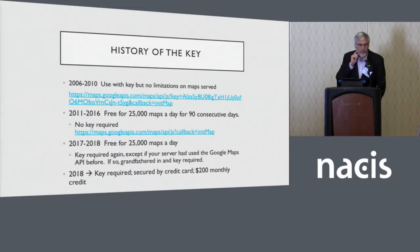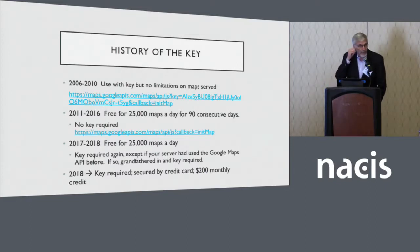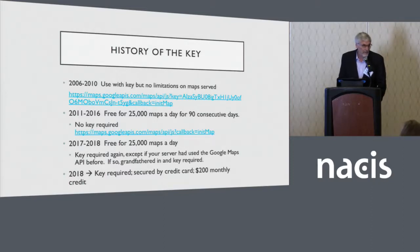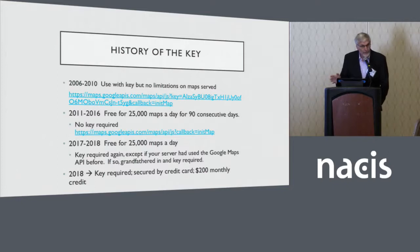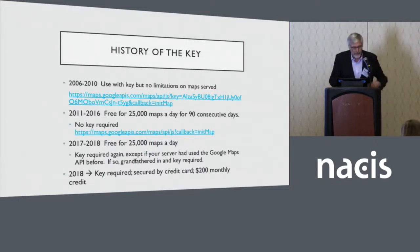A lot of us think our maps are being used more than they are. At this time, many people moved away from Google Maps because they thought that limit was too daunting, so they moved to another platform and other APIs were developed and used. From 2017 to 2018, it was just 25,000 maps a day. From 2018 onward, a key is required — your Google Maps will not work without one.